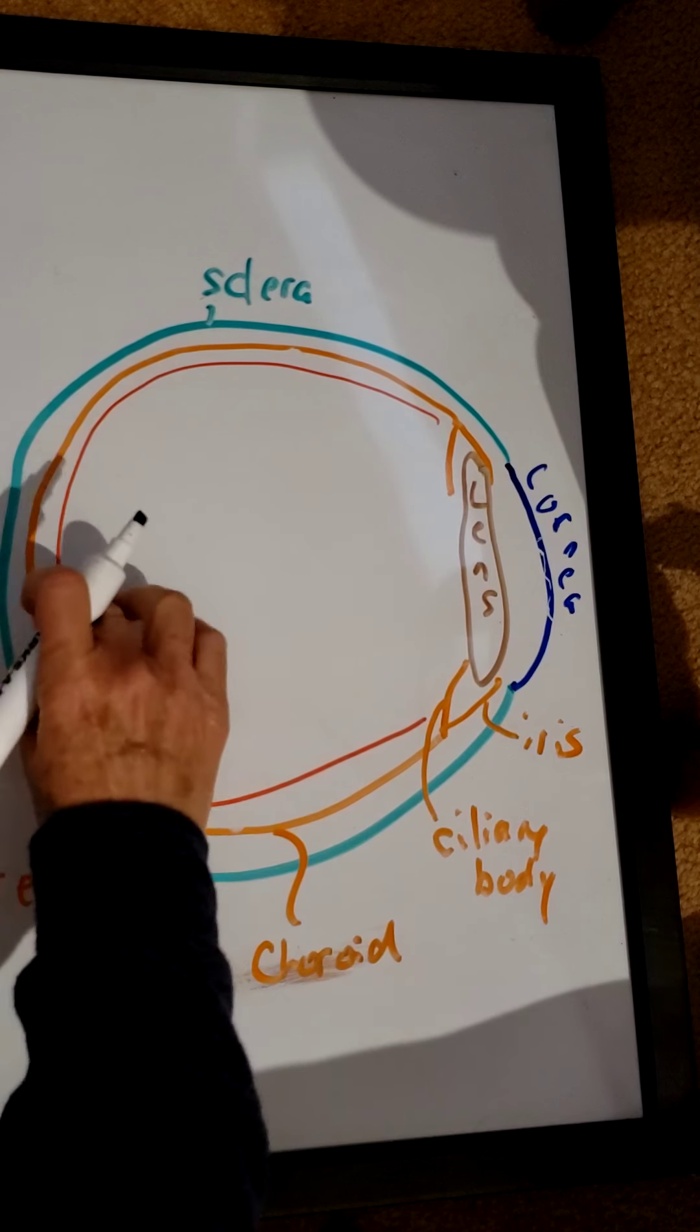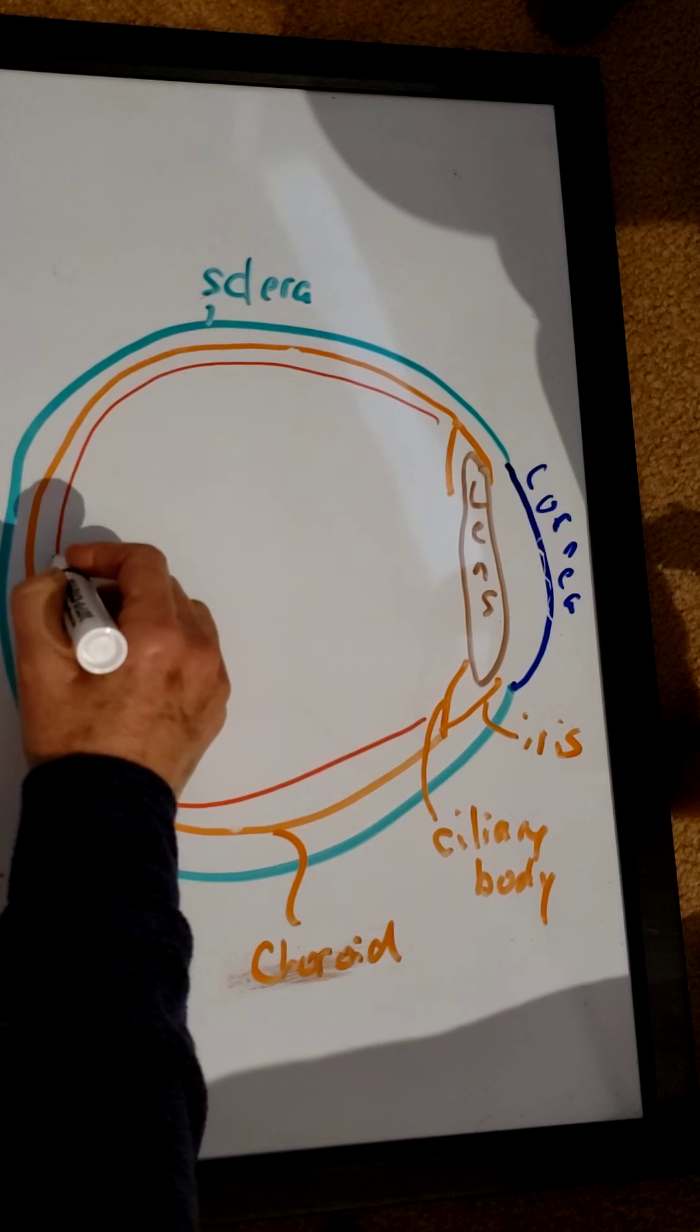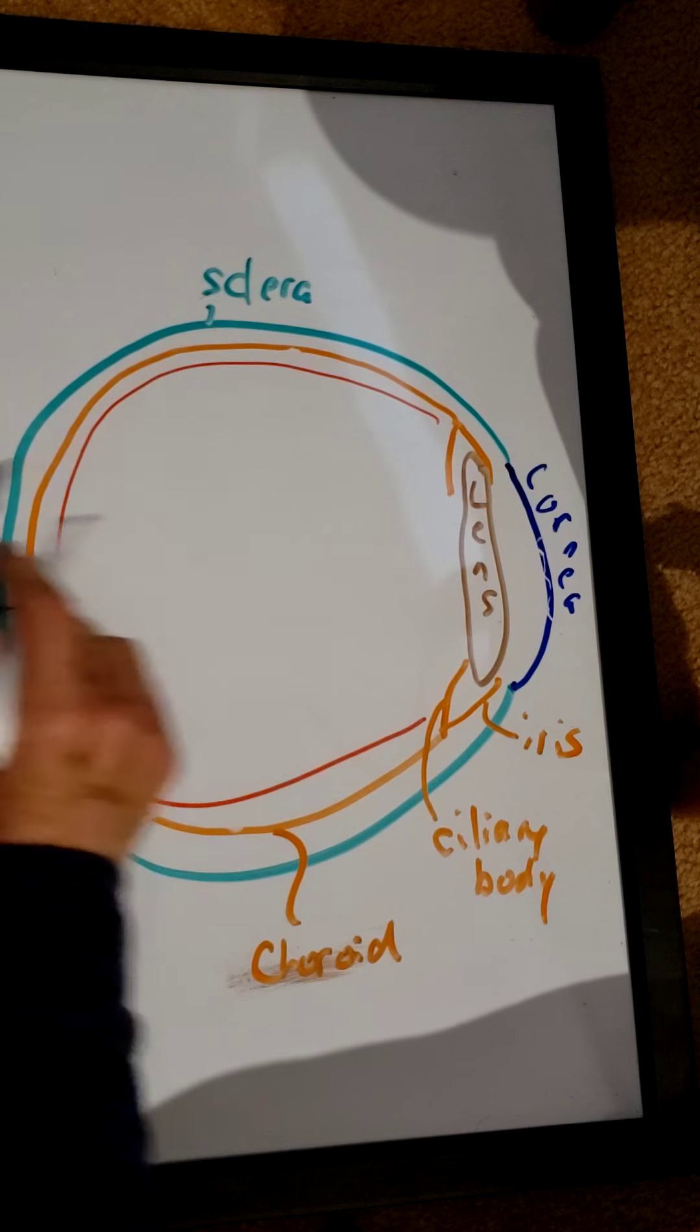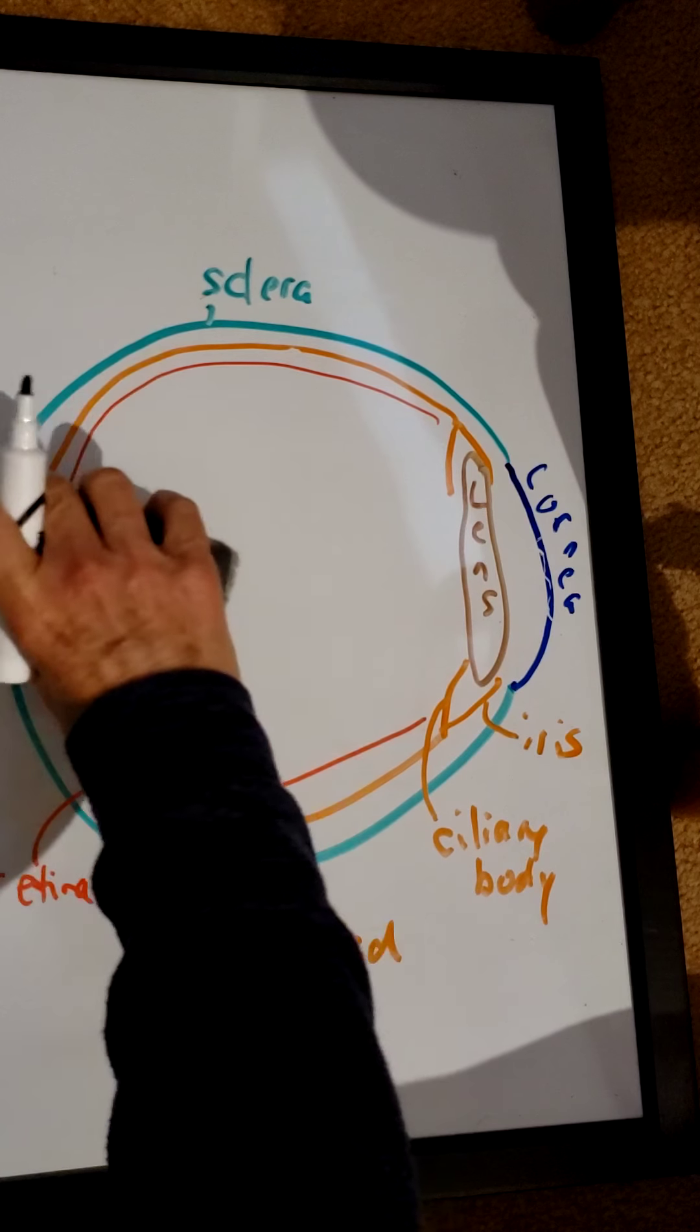Coming out of the back of the retina there's one little spot here that has no light receptors, and coming out of the back is the optic nerve.